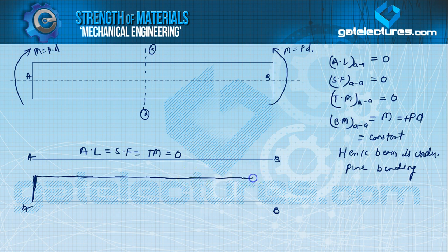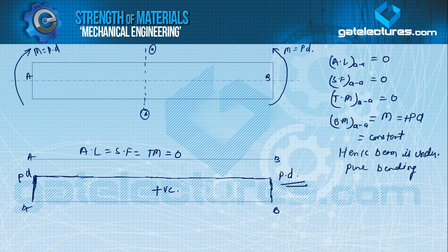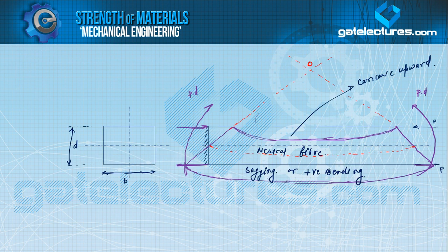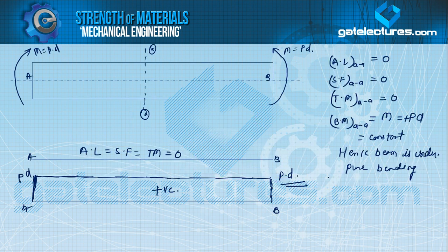The bending moment diagram is positive throughout, equal to P×D, because this is positive bending. So constant bending couples act at the extreme ends — equal and opposite at both end points — and therefore this is pure bending. In sagging, top fiber is under compression and bottom fiber is under tension. This is the BMD.